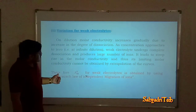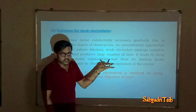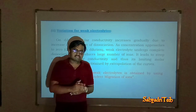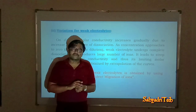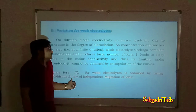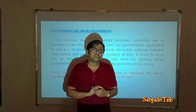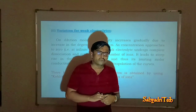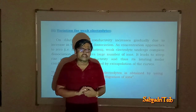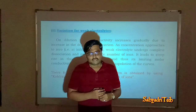Therefore, the limiting molar conductivity of a weak electrolyte cannot be calculated by the Debye–Hückel–Onsager expression or graphical method. To overcome this difficulty, a scientist named Kohlrausch gave a law named Kohlrausch's law. With the help of Kohlrausch's law, it is possible to calculate λ°m of a weak electrolyte. In the next session we will discuss Kohlrausch's law and how to determine λ°m of a weak electrolyte and its applications.